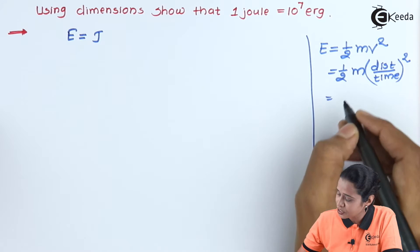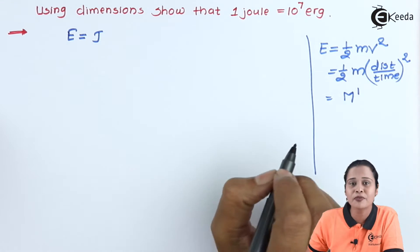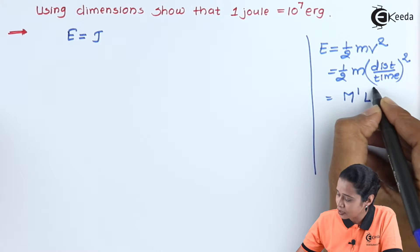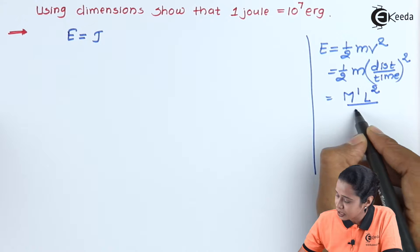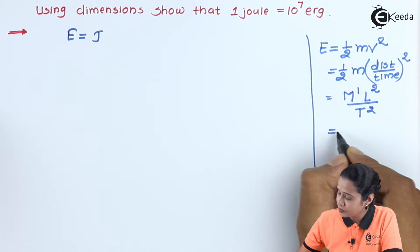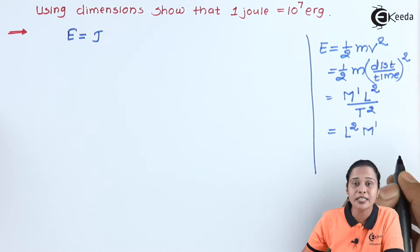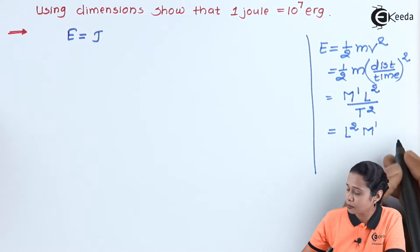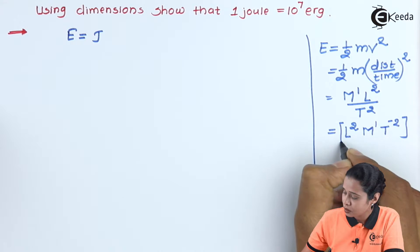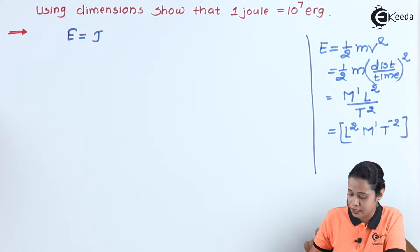Hence, the dimension will be: mass — that is M — will be 1; distance we will express in terms of length, so its power is 2, giving L², and then time — that is T² because it is squared. Finally, we can write this as M¹L²T⁻², since T is in the denominator it becomes T minus 2. So this is the dimension of energy.